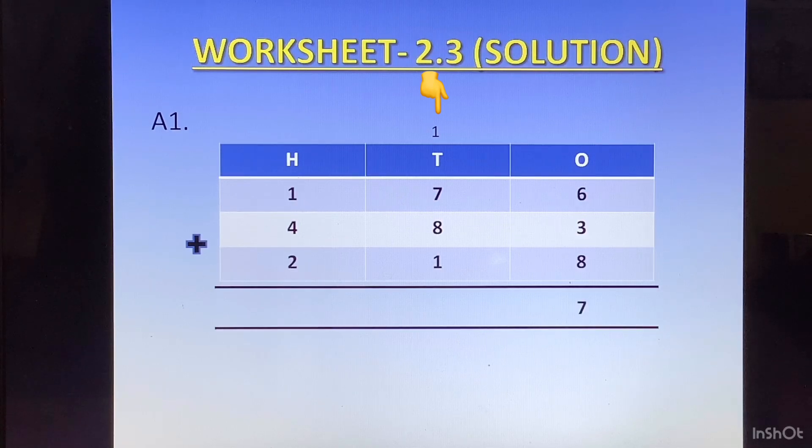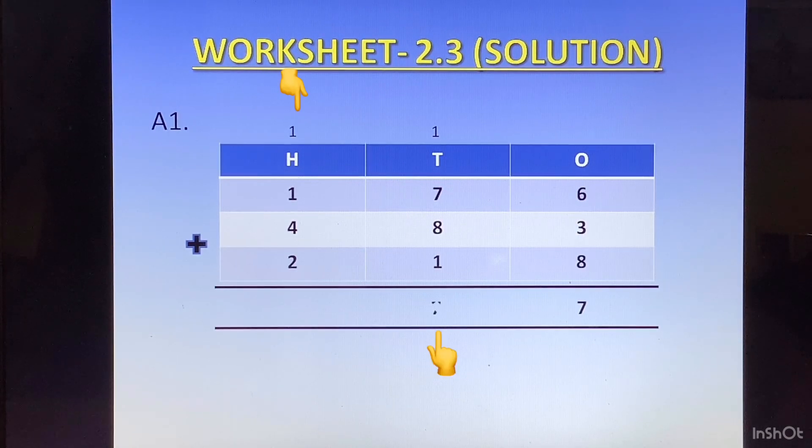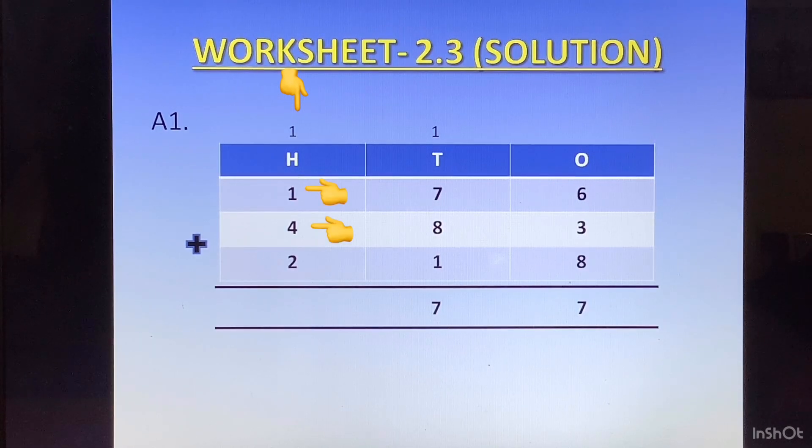Then we go to the tens column. Here we have 7 plus 8 is 15, plus 1 is 16, and plus 1 of the carry is 17. 1 at the top of hundreds column and 7 at the bottom of tens column. Then in the hundreds column we have 1 plus 4 is 5, plus 2 is 7, plus 1 of the carry is 8. So our answer becomes 877.